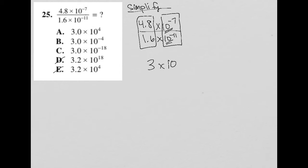And what I do with the exponents is I subtract the exponents. So negative 7 minus negative 11, which turns into negative 7 plus 11, which is equal to 4. So my answer should be 3 times 10 to the fourth power. And therefore, the answer should be choice A.